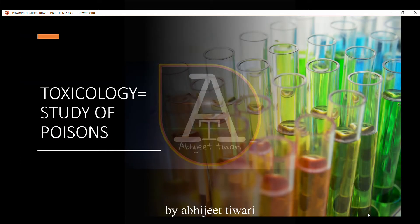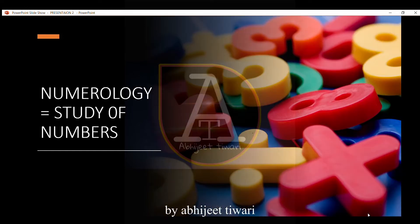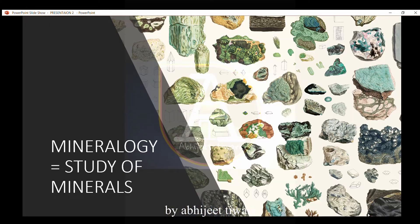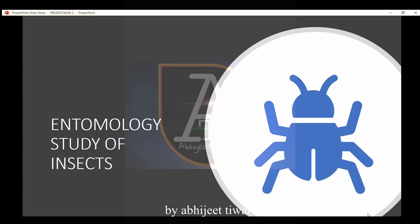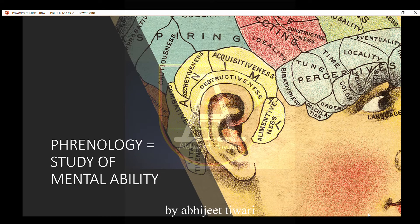Toxicology is the study of poisons. Numerology is the study of numbers. Mineralogy is the study of minerals. Entomology is the study of insects. Phrenology is the study of mental ability.